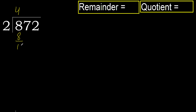Subtract. 8 minus 8 is 0. Next, bring down — eliminate 0, bring down 7.